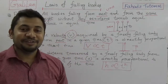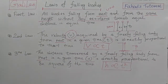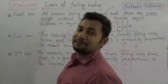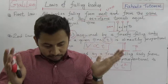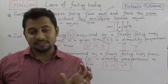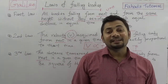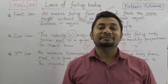To summarize: the first law is that all bodies falling from rest and from the same height without any resistance travel equal distance in equal time. The second law is that the velocity v acquired by a freely falling body from rest in a given time t is directly proportional to that time. The third law is that the distance traversed by a freely falling body from rest in a given time t is directly proportional to the square of the time. On the next class I shall be explaining more mathematical questions available on your question paper. See you next class — stay with me, keep watching, and do let me know your requirements. Take care, bye.